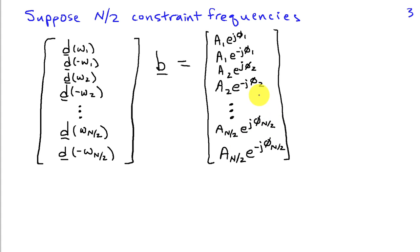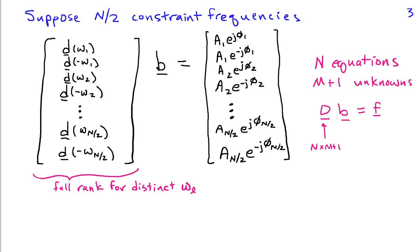When I look at this system of linear equations, I have a total of N equations and M+1 unknowns. I can take this matrix and call it capital D matrix. It's going to be N by M+1, b is M+1 by 1, and f is an N by 1 vector.